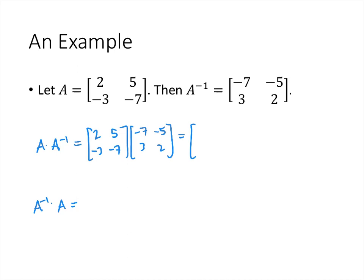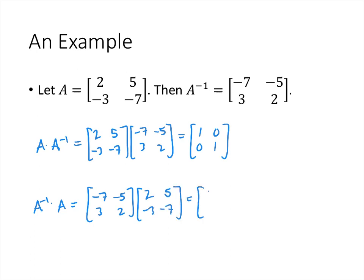When we work this out, multiplying A by A inverse, we do indeed get [1, 0; 0, 1]. And when we multiply A inverse by A in the other order, we again get [1, 0; 0, 1].